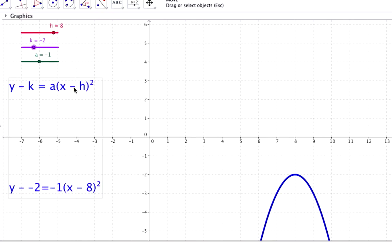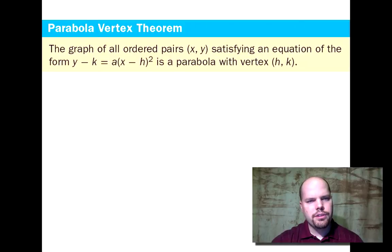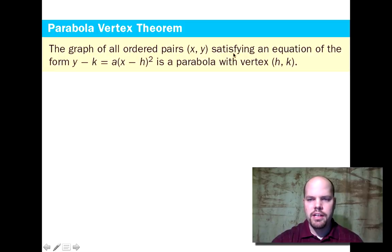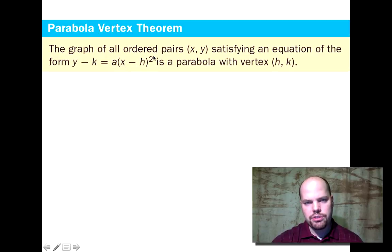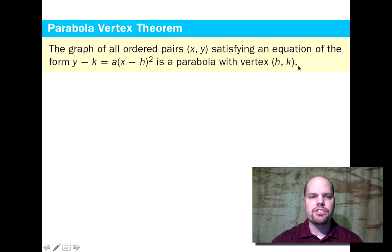Hopefully you get a feel for what h, k, and a do in the equation. We have a theorem for that called the parabola vertex theorem. The graph of all ordered pairs x and y satisfying the equation y minus k equals a times the quantity x minus h squared is a parabola with a vertex at h and k. That's why this is called the parabola vertex theorem — we can get the vertex from this form of the equation.